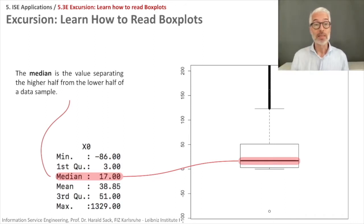You can have a look at our data, for example, if you compare it to the minimum and maximum. So the minimum here is at minus 86, the maximum is at plus 1329, and the median is at 17. So you see that most of the values,